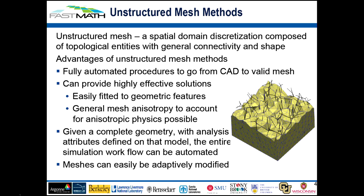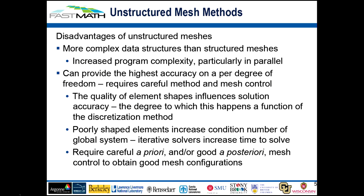When used properly, unstructured meshes can be highly effective — they can fit to the geometry and account for anisotropy associated with the physics of the solution, influenced by the domain and its curvatures. Given a complete geometric representation, we can do this entirely automatically and adapt. The disadvantages are more complex data structures than for structured meshes — they're larger, harder to work with. That's part of the reason we're in business, creating these parallel infrastructures. We need richer representations and their association with the geometry.